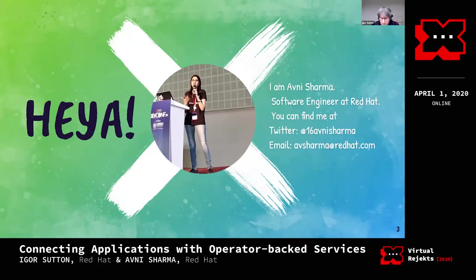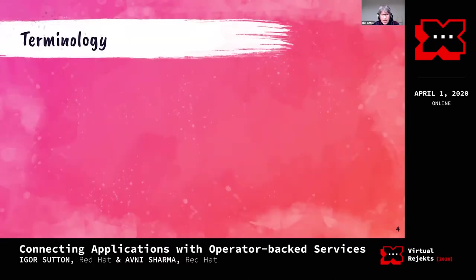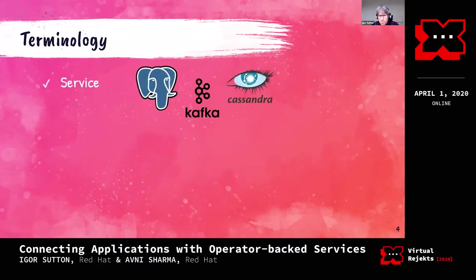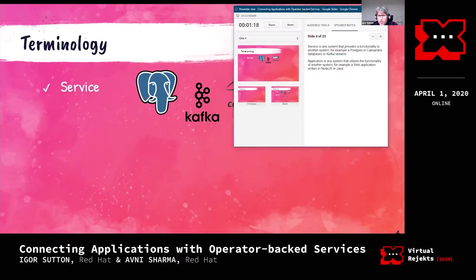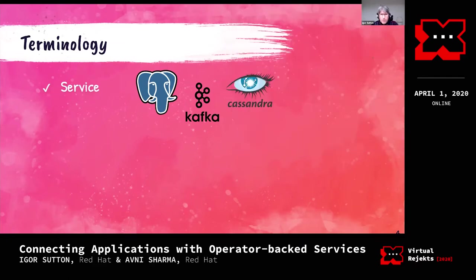Before we start, let's go over some of the terminology we're going to use. The first one is 'service.' We already have a lot of meanings for service, but in the context of this talk, a service is any system that actually provides some functionality to another system. For example, we're talking about databases like Postgres or Cassandra, or Kafka streams - systems that offer functionality to other systems.